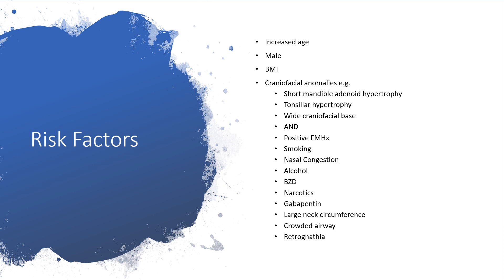What are the risk factors? Increased age, and being male is disadvantageous when it comes to obstructive sleep apnea. Increased body mass index — that is, increasing weight — and craniofacial anomalies. For example, some will have a short mandible with adenoid hypertrophy, tonsillar hypertrophy and wide craniofacial base. There is also the possibility of positive family history, history of smoking, nasal congestion, alcohol, benzodiazepine use, narcotics, hypertension, large neck circumference, crowded airway with large uvula and tonsils, and retrognathia.